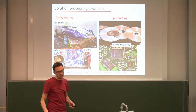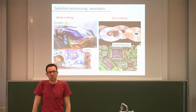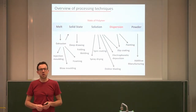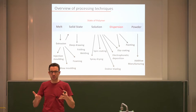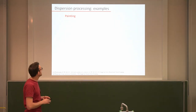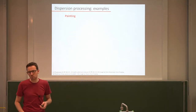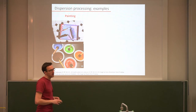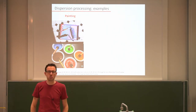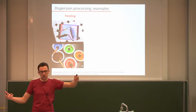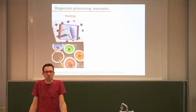These solution-based processes all operate using polymer chains dissolved in a solvent — a liquid material. There are also processes that involve polymers in a dispersion, where the polymer is in a solid state but the surrounding medium is liquid. One example is dispersion paints, used to paint our walls. These contain pigments for color but also need polymers as a binder so that the paint sticks to the wall.